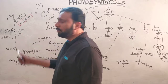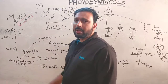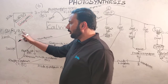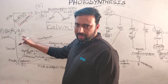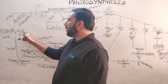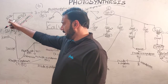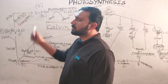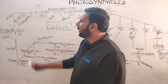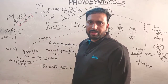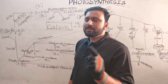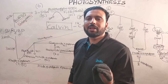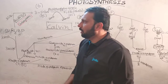In the C3 pathway, three molecules of RuBP — ribulose 1,5-bisphosphate — each containing five carbons, are condensed with three molecules of carbon dioxide to form six molecules of 3-PGA. Each 3-PGA contains three carbons. Due to the presence of three carbons in the first stable compound, this pathway is called the C3 pathway.